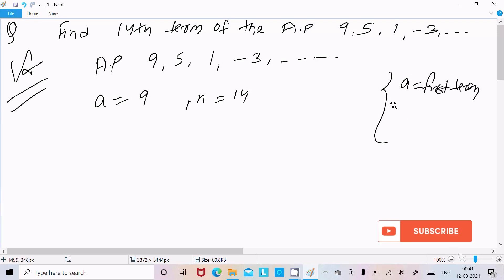Now for d, the common difference, you can calculate it as n2-n1, or n3-n2, or n4-n3. So here, d is 5-9, which gives us d = -4.